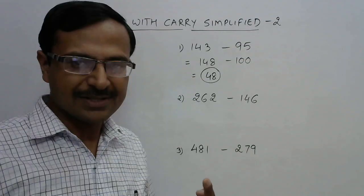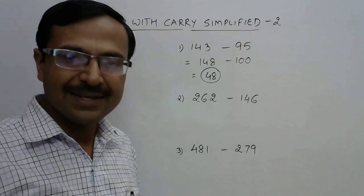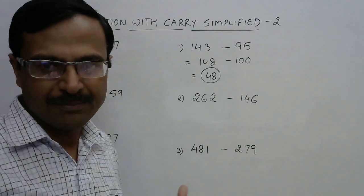Simple answer to the question is 48. So if you subtract 143 and 95, you are going to get the same answer, 48. Isn't that easy and saves a lot of time? Of course yes.